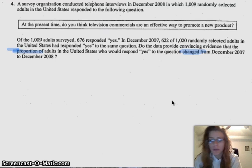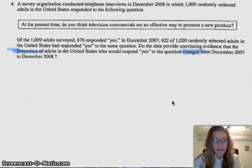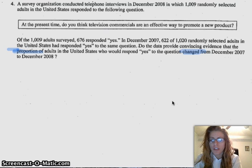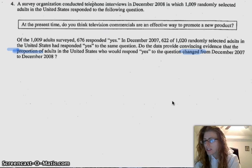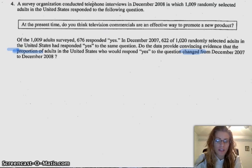So your alternative hypothesis is going to have a not equals. Since it's two-sided, we could answer this two different ways. One, we could answer it with a confidence interval. The other way, we could do a hypothesis test. It doesn't really matter which one you choose. Your state, plan, and conclude are going to be really similar if you're doing either one, but your do step is going to be significantly different. I think I personally would want to do a hypothesis test.